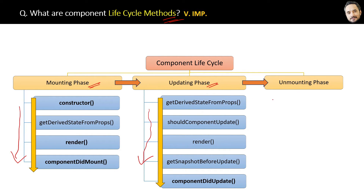Notice here that the render method is in both phases. Why? Because if you make any change in the component, then in the updating phase the same render method will execute again. So the render method can execute multiple times. I will explain that in detail later.